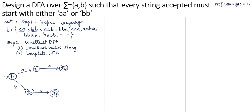Now let's complete the DFA by responding to all inputs at every state. q0 has responded to both input A and input B. Coming to state q1: q1 has already responded to input A. If at q1 we get a B, it breaks the pattern of starting with AA, so this input leads to a dead state q5. q1 has now responded to both inputs A and B.